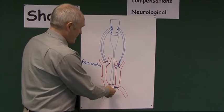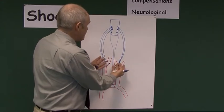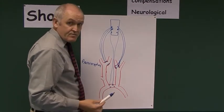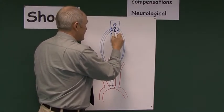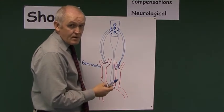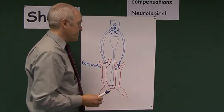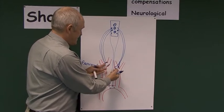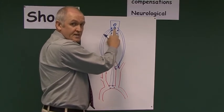When blood pressure starts to drop, that's detected by the baroreceptors, which send sensory nerve impulses up to the medulla oblongata. In the medulla oblongata of the brain stem there are the vasomotor center, the cardiac center, and the respiratory center. The vasomotor center controls vasomotor tone all over the body, and the cardiac center controls the heart. The sensory nerves send messages to the medulla oblongata saying the blood pressure is dropping.